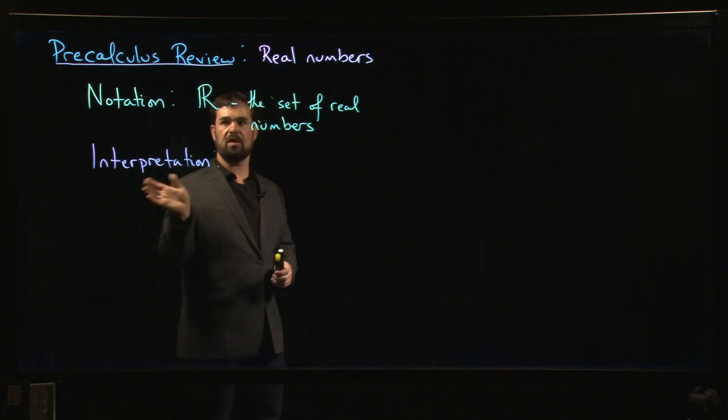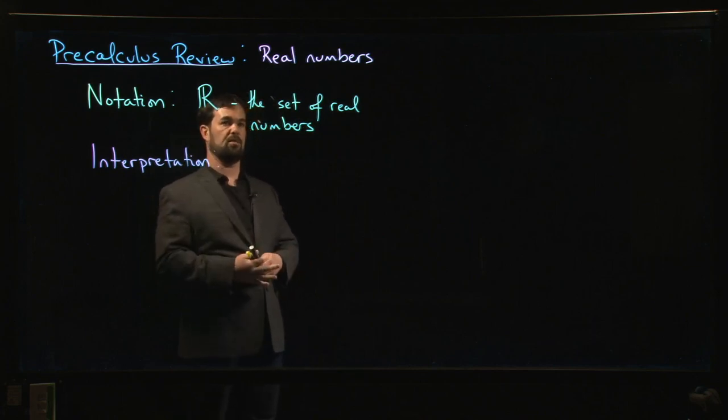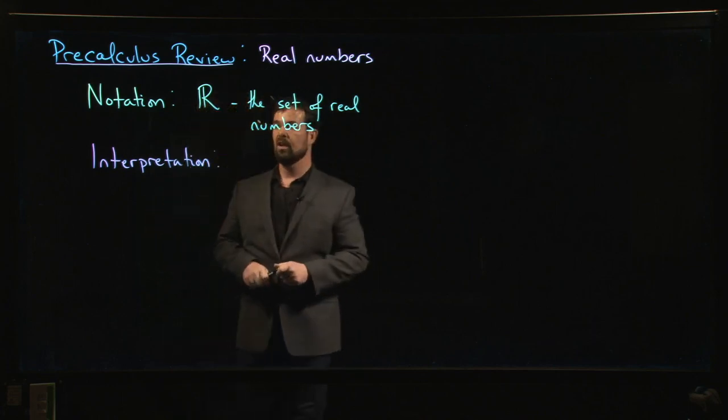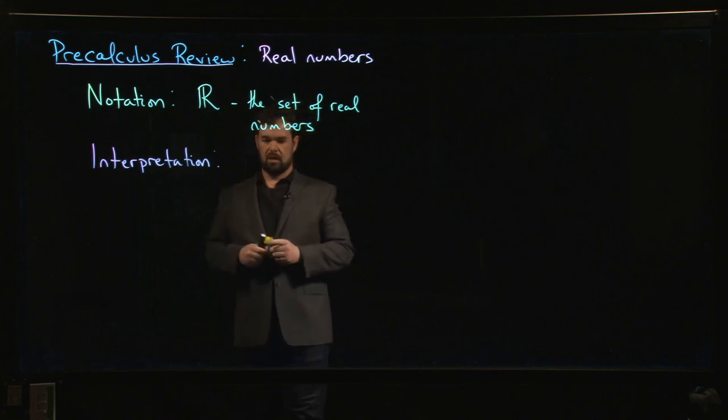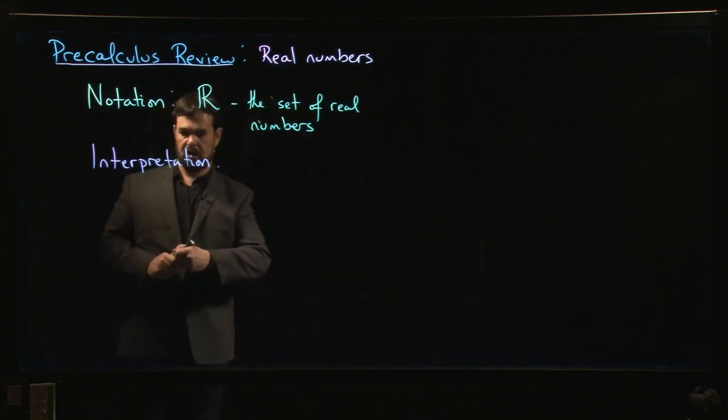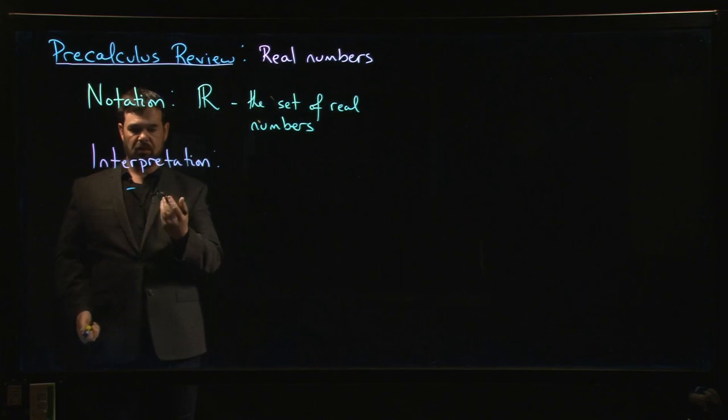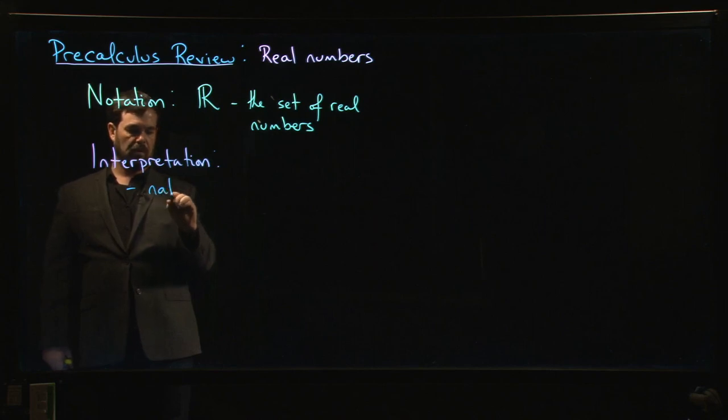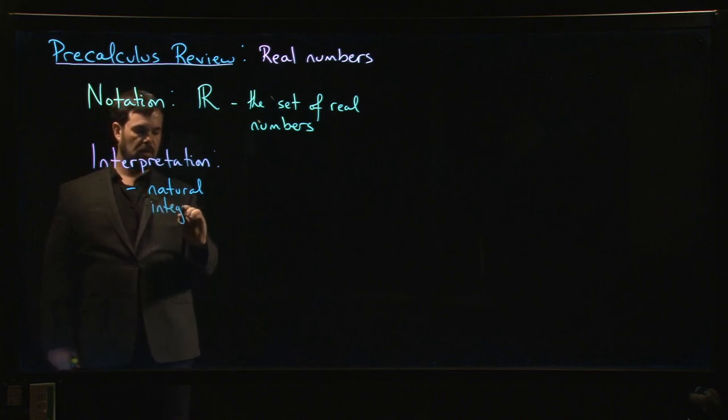This notation, this bold-faced R you've probably seen before to denote the set of real numbers. You've probably seen in high school some discussion of different ways that you can interpret the real numbers. So one of the interpretations is, first of all, your natural numbers are in there. Your natural numbers, your integers – you include the negatives, those are also in there.